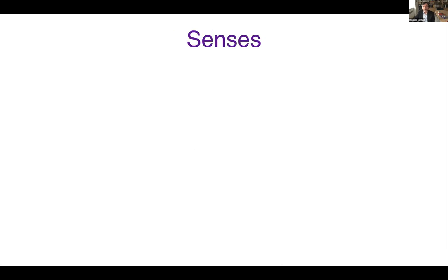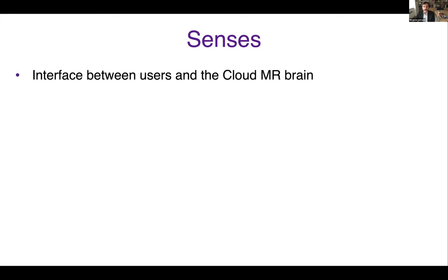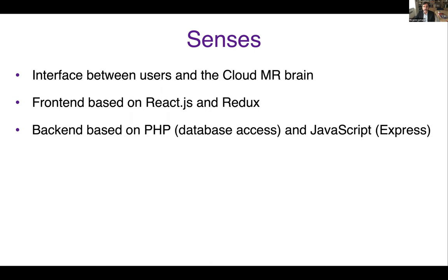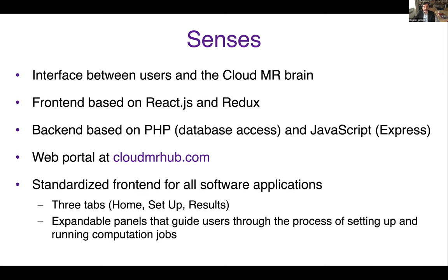Like our brain interacts with the environment through our five senses — or six if you're Spider-Man — the brain of CloudMR needs to interact with the users. For this, we developed a graphical user interface that functions as the senses for CloudMR. Our first front-end implementation was based on AngularJS; now we're almost done rewriting everything in ReactJS and Redux. The back-end is based on PHP to access the database and JavaScript. All CloudMR applications will be accessible via web portal at cloudmrapp.com, and we are implementing a standardized front-end in which every application has three tabs: home, setup, and results, with expandable panels guiding the user through the process.